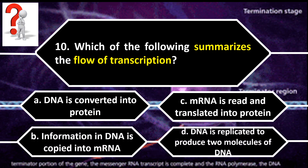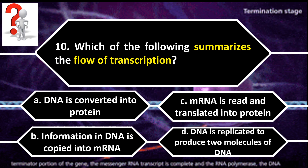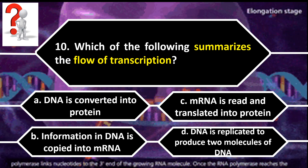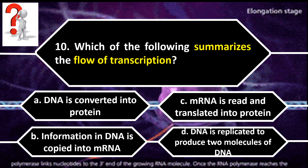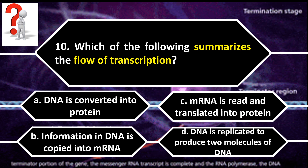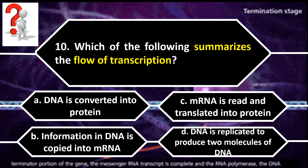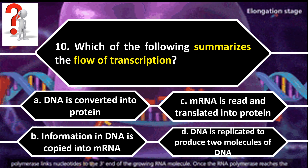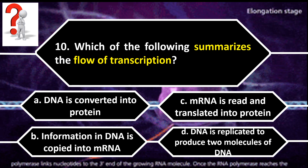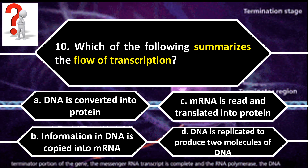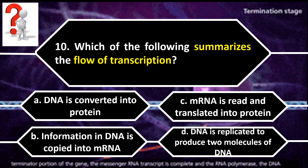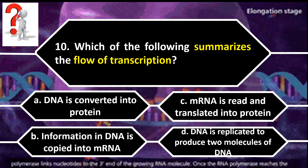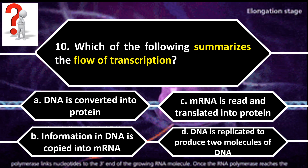Number 10. Which of the following summarizes the flow of transcription? A. DNA is converted into protein. B. Information in DNA is copied into mRNA. C. mRNA is read and translated into protein. D. DNA is replicated to produce two molecules of DNA.